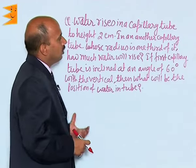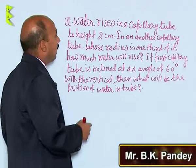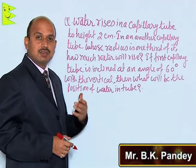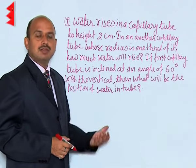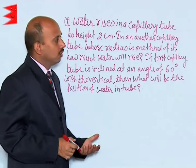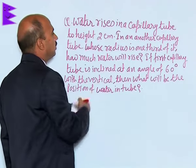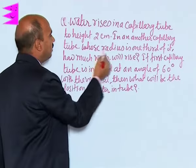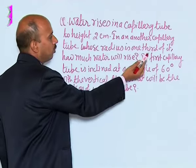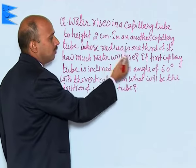Now, see this question is based on the capillary tube. We have done the formula, the ascent formula, and also the descent formula. Now see this question: water rises in a capillary tube to a height of 2 centimeters. In another capillary tube whose radius is one third of it, how much water will rise?